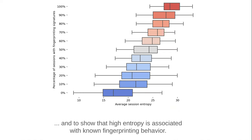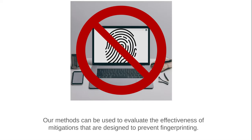We show that high entropy is associated with known fingerprinting behavior. Our methods can be used to evaluate the effectiveness of mitigations that are designed to prevent fingerprinting.